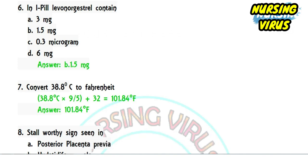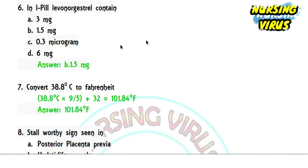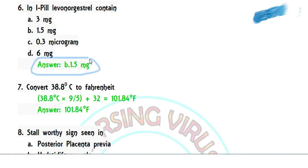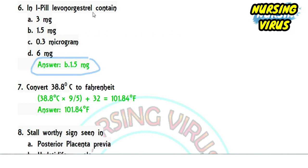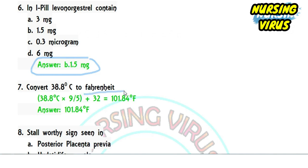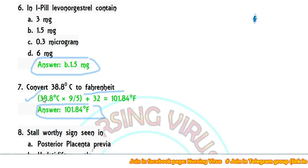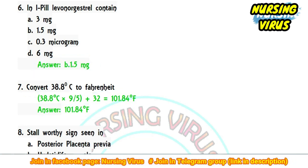Question 6: the i-pill (levonorgestrel) contains which dose — 3 mg, 1.5 mg, 0.3 mcg, or 6 g? The correct answer is 1.5 mg; the i-pill contains levonorgestrel 1.5 mg. Question 7: convert 38.8 degrees Celsius to Fahrenheit. The correct answer is 101.8°F.